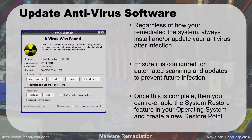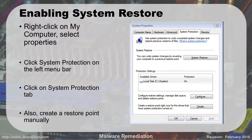Once you've done a full scan and verified your system is clean with new definitions, you can re-enable the system restore feature and create a new restore point. Give it a name like 'after virus cleanup' so you'll remember in six months that was a good restore point. Also go back and delete those old system restore points that had the virus in them — you don't want to restore from them six months from now and bring that virus back. To re-enable, right-click on My Computer, select Properties, click System Protection on the left menu bar, then use the Create button at the bottom of the dialog box.